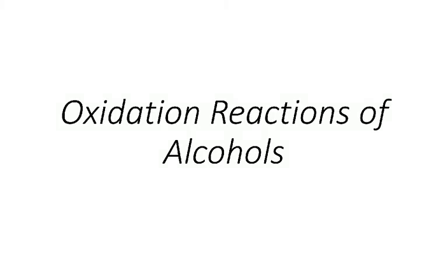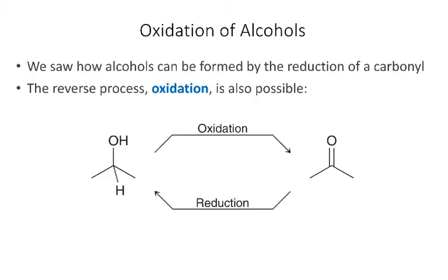In previous videos we talked about oxidation and reduction and how we can make alcohols through reduction reactions. In this video we're going to look at oxidation reactions of alcohols. We saw previously how we could make alcohols from the reduction of aldehydes and ketones, and now we're going to go in the opposite direction and see how we can oxidize alcohols to form aldehydes, ketones, and carboxylic acids.